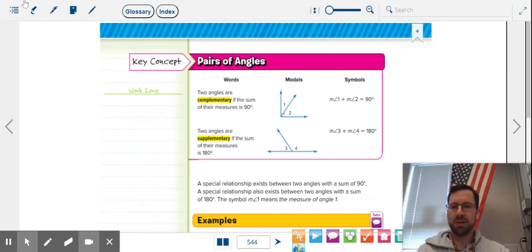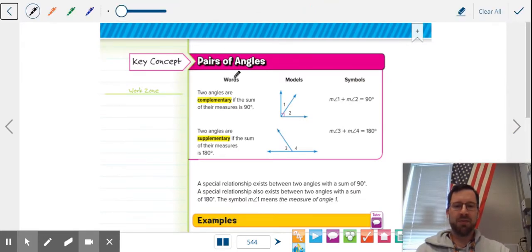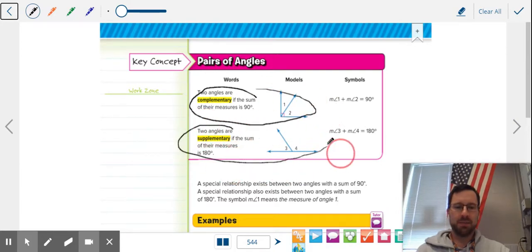So what are complementary and supplementary angles? They're a pair of angles that either add up to 90, complementary, or 180, supplementary.